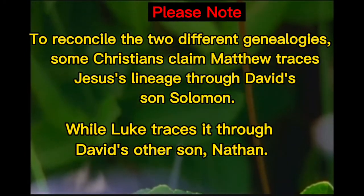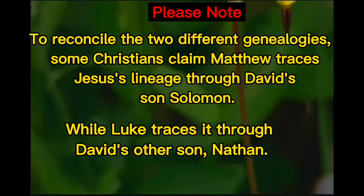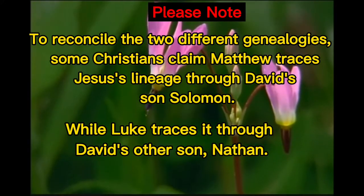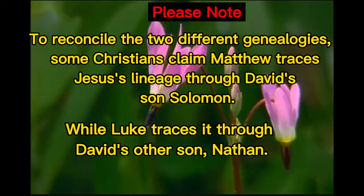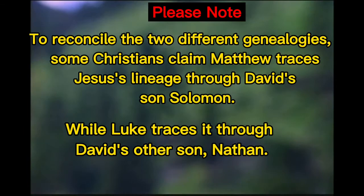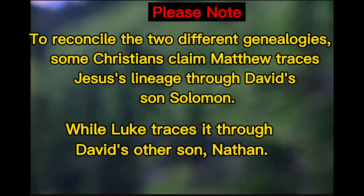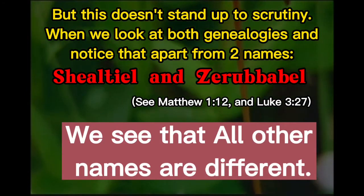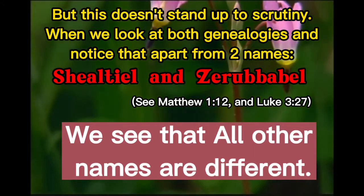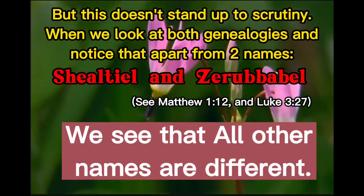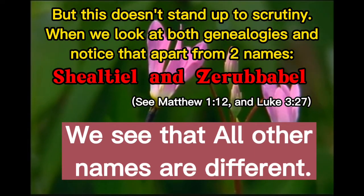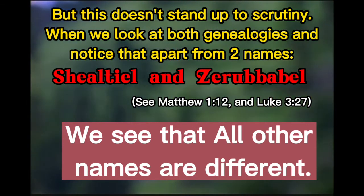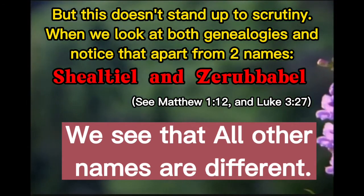To reconcile the two different genealogies, some Christians claim Matthew traces Jesus' lineage through David's son Solomon, while Luke traces it through David's other son Nathan. But this doesn't stand up to scrutiny. When we look at both genealogies, apart from two names, Shilteal and Zerubbabel — see Matthew chapter 1 verse 12 and Luke chapter 3 verse 27 — all other names are different.